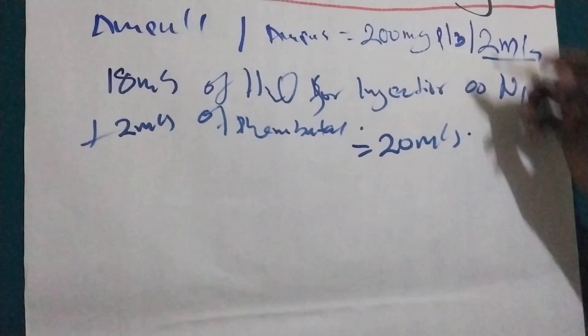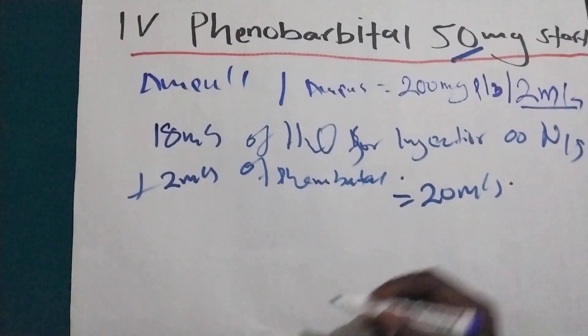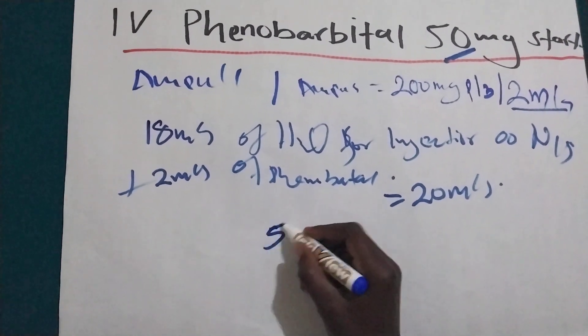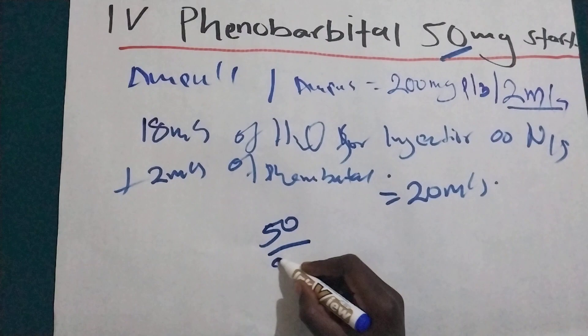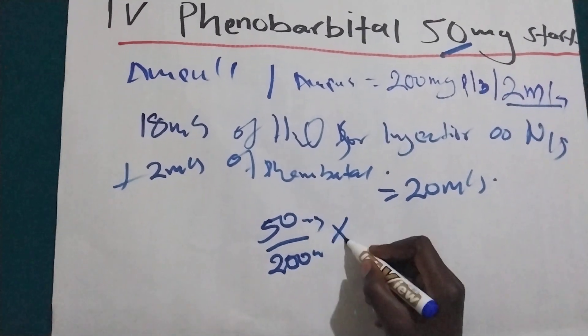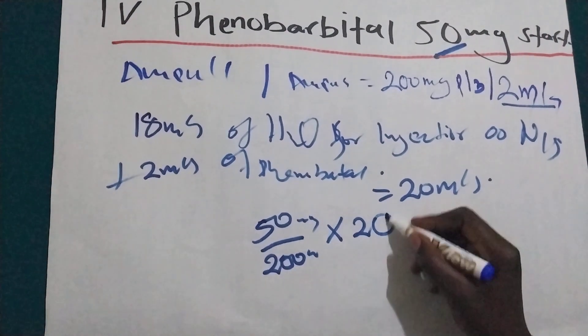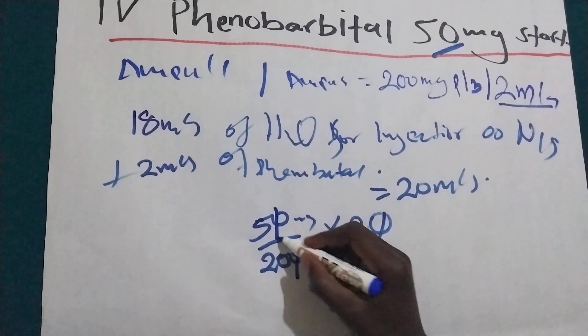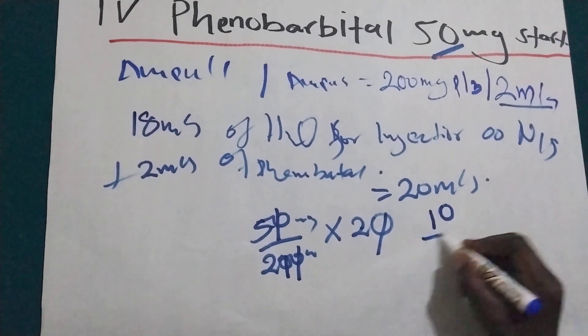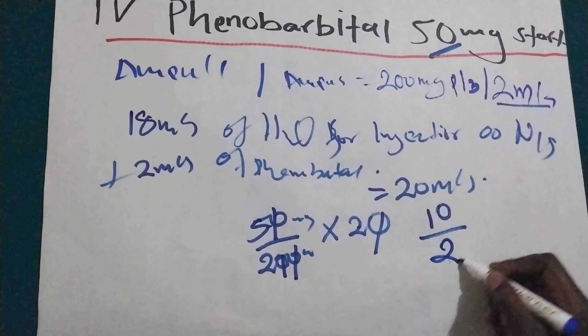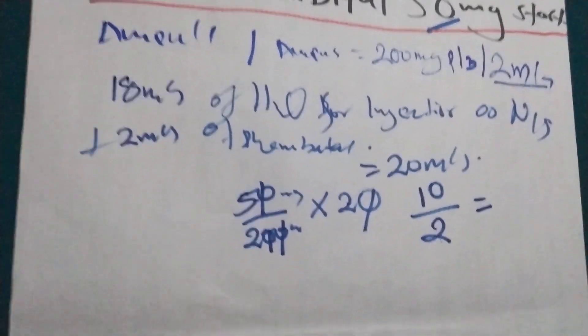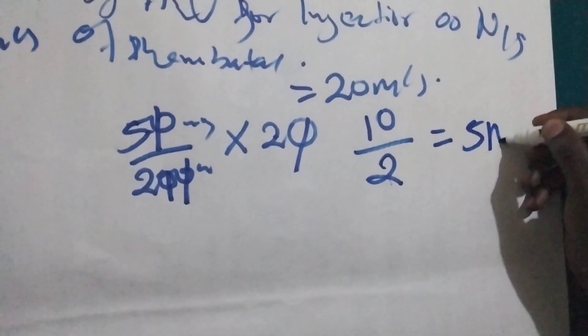Doctor has prescribed 50. So what we are going to do, we are going to say 50 divided by 200 milligrams times 20. This is equal to 10 divided by 2. Our dose is equal to 5 mls.